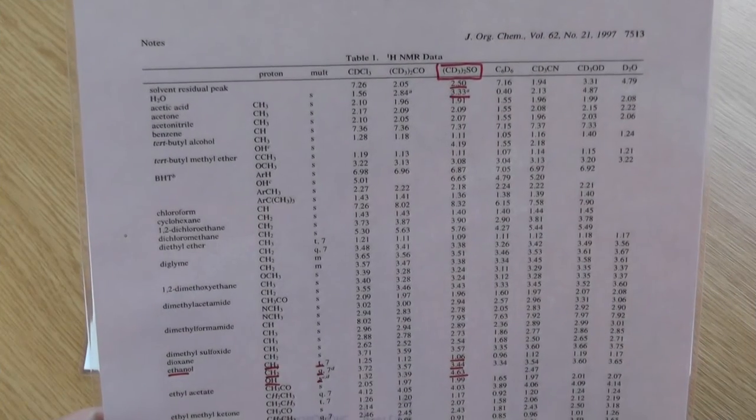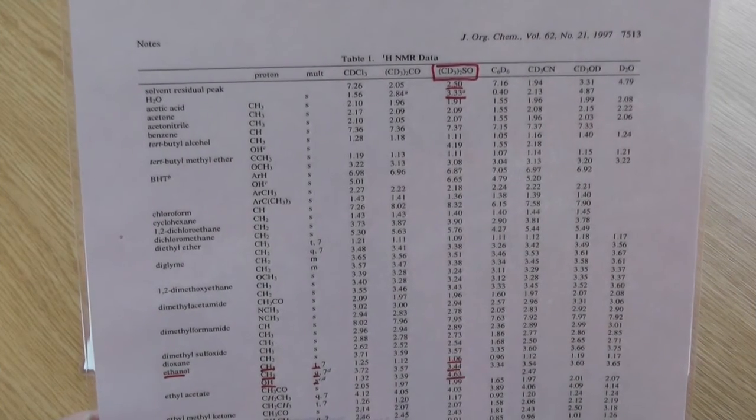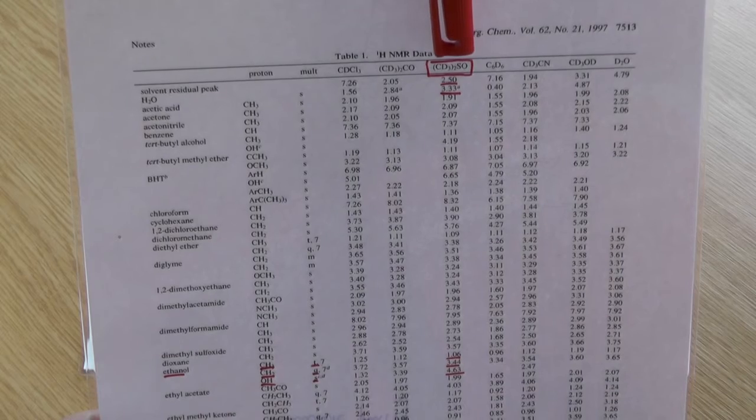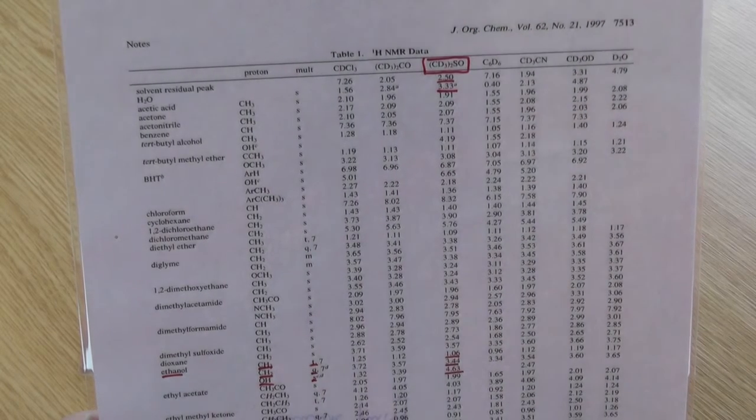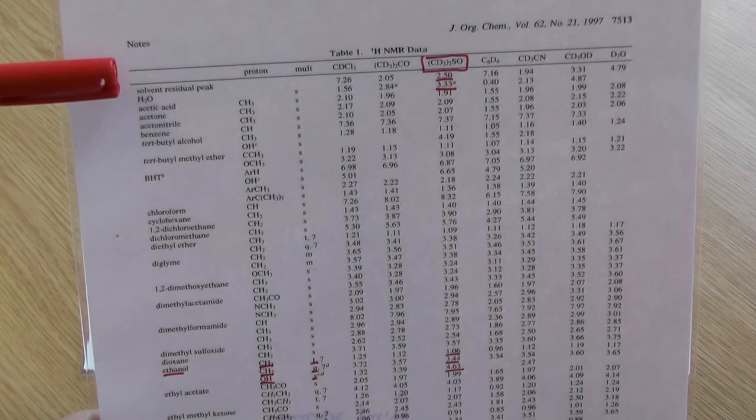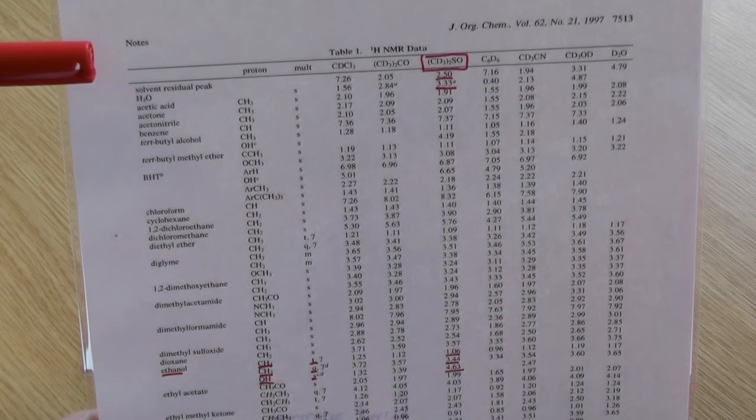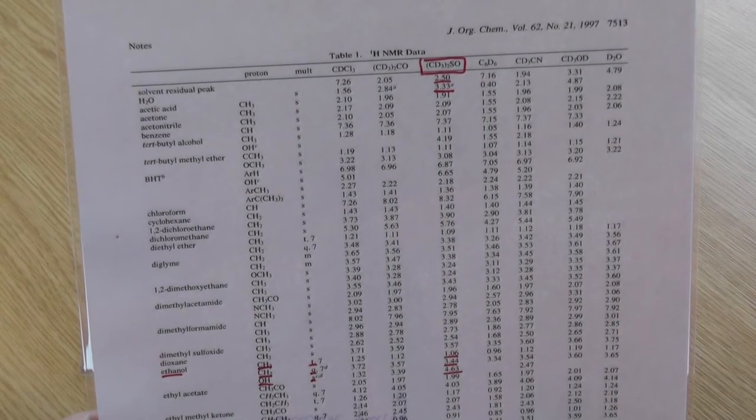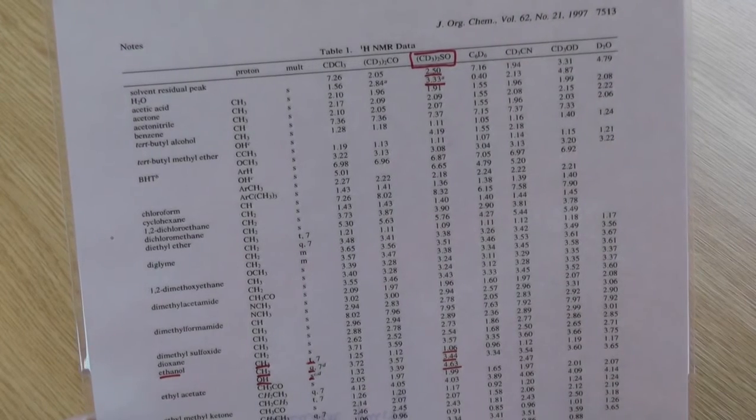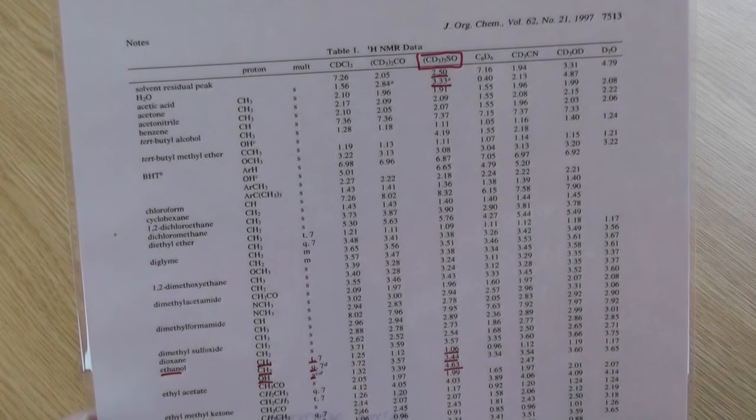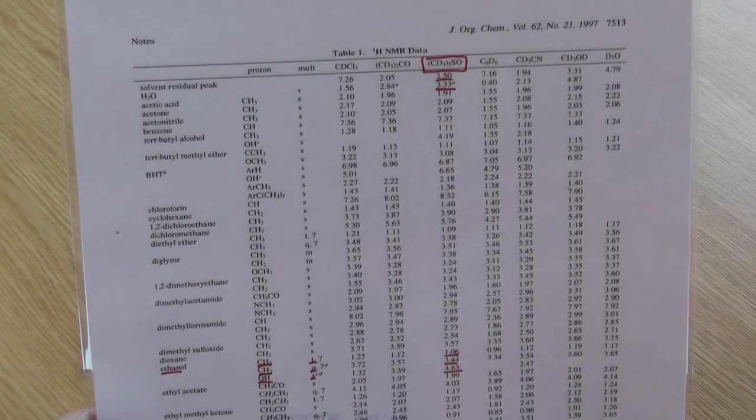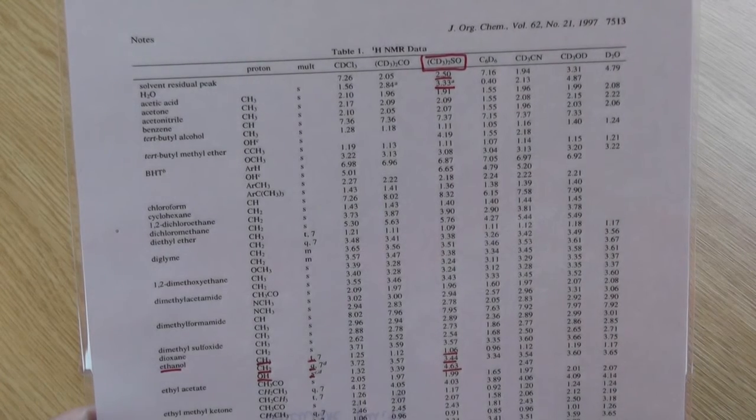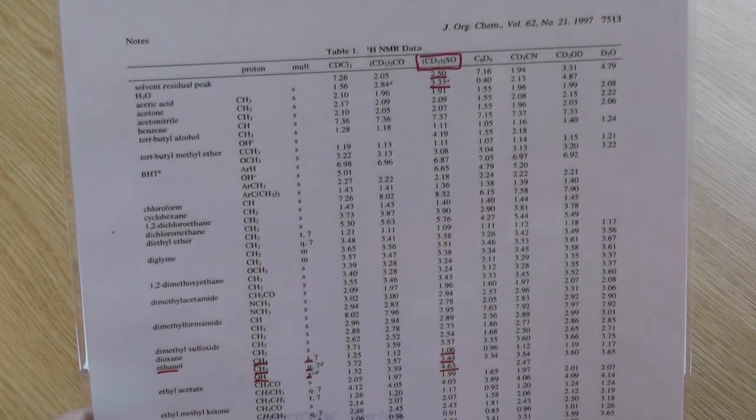Looking at the table, the top row has a list of deuterated solvents that you might have run your NMR spectrum in. We ran our spectrum in deuterated DMSO. You can see that there's a chemical shift for the solvent residual peak which is a peak caused by the deuterated solvent. Although the solvent is deuterated and you might not expect to see a peak from it, because of the way that deuterated solvents are made there will usually be a peak there from it. Also because of the way deuterated solvents are made there will usually be a water peak.